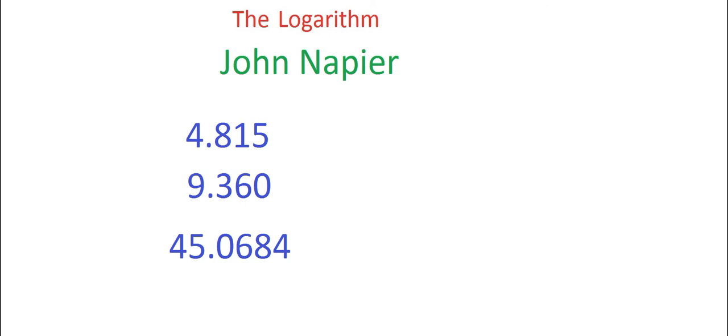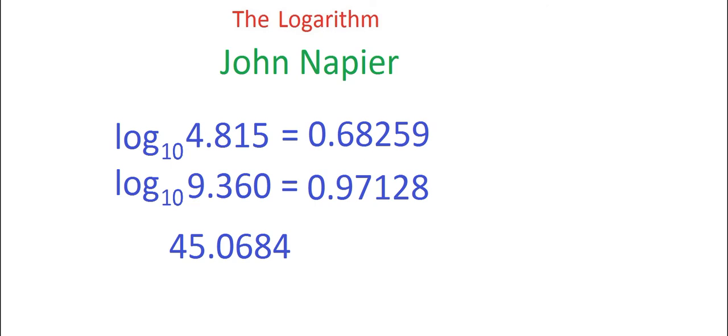Mr. Napier would approach it as follows. First, take the logarithm of each factor. These would be found within books that had tables of logarithms. So that the logarithm of 4.815 to the base 10 is 0.68259, and the logarithm of 9.360 to the base 10 is 0.97128.